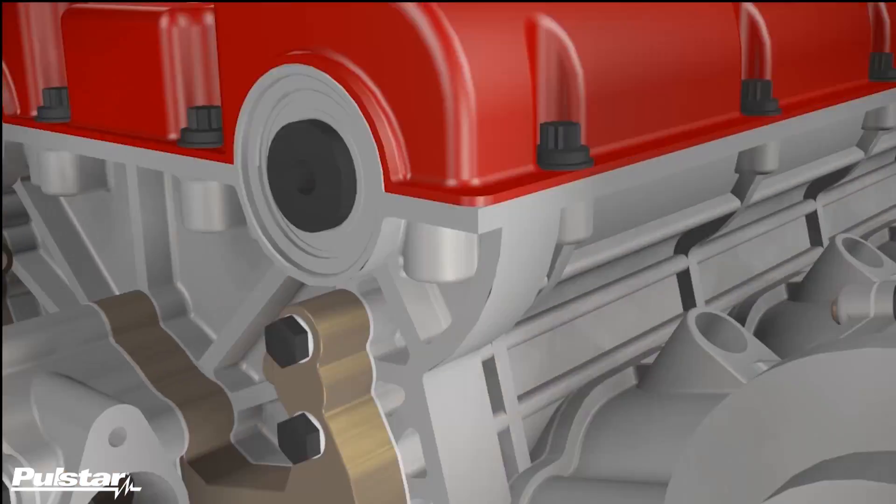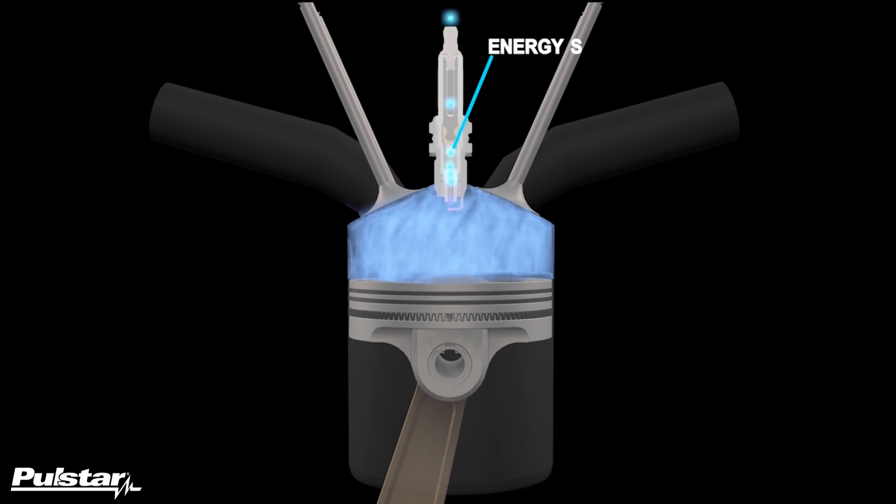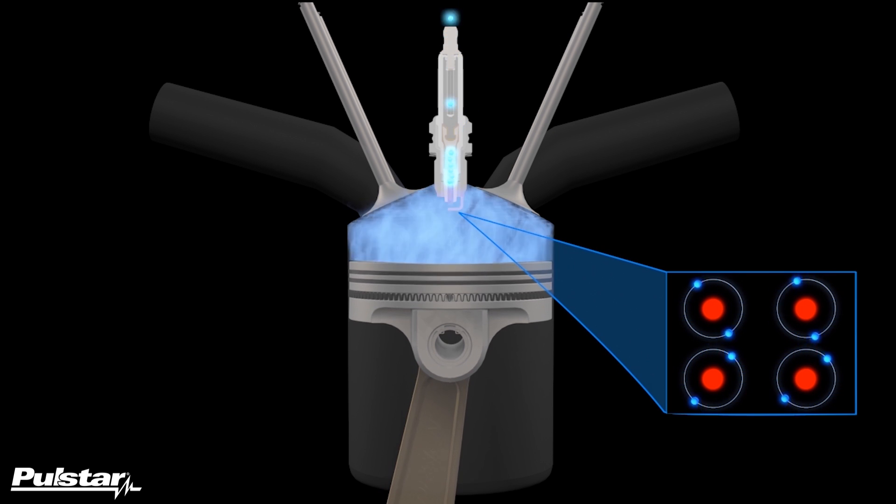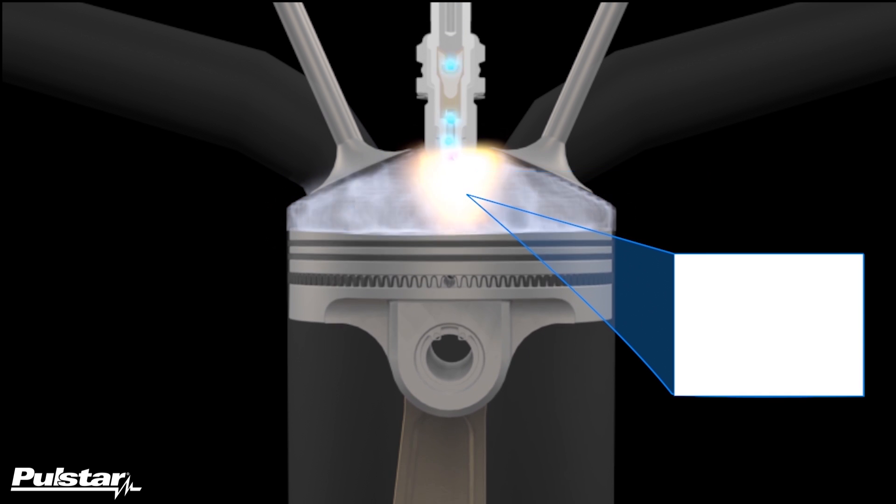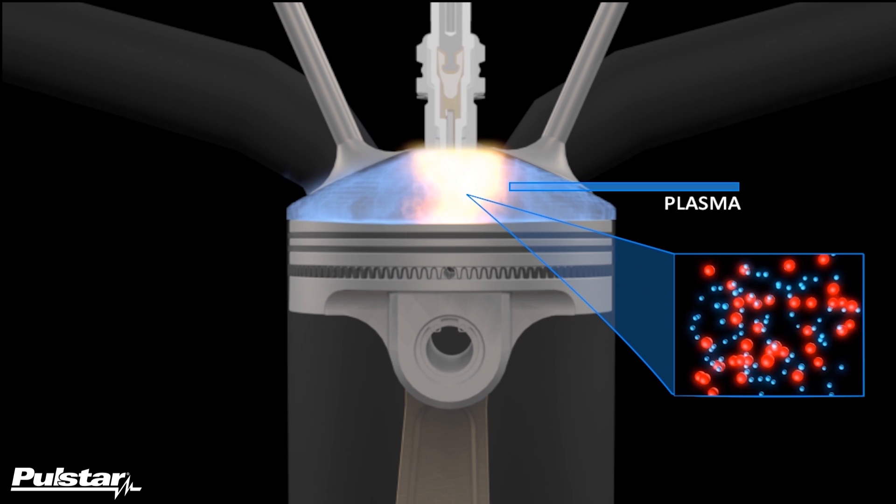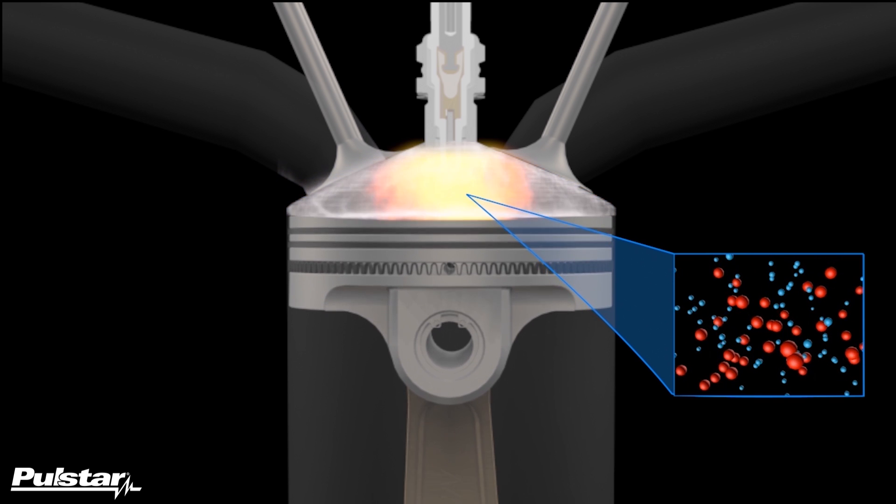Polestar's capacitor allows it to store energy delivered by the ignition coil prior to the spark. When the spark is formed, that energy is released in a powerful nanosecond burst of energy. This short burst is so intense that it breaks apart the molecules in the gaseous fuel and turns it into a highly excited plasma field.